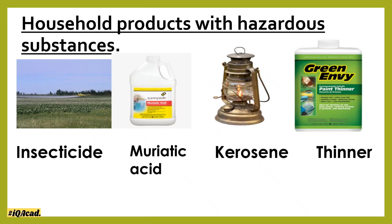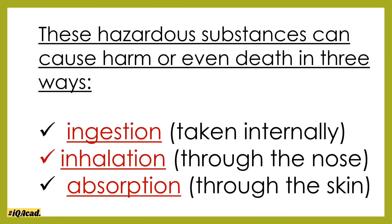These are the household products with hazardous substances: insecticide, muriatic acid, kerosene, thinner. These hazardous substances can cause harm or even death in three ways.